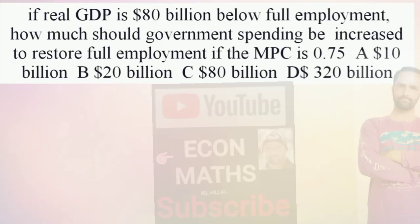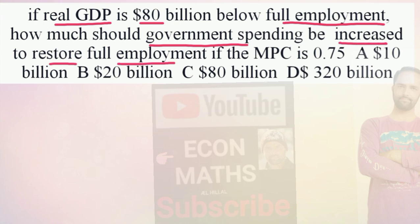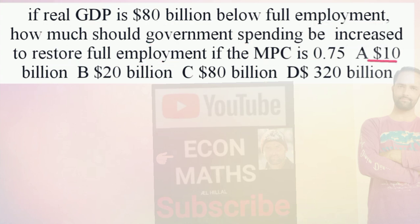I'll solve a problem on the income determination model. The question is: if real GDP is 80 billion dollars below full employment, how much should government spending be increased to restore full employment if the marginal propensity to consume is 0.75? The options are 10 billion dollars, 20 billion dollars, 80 billion dollars, or 320 billion dollars.